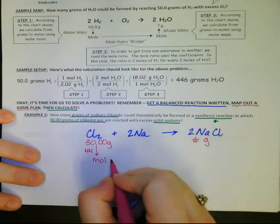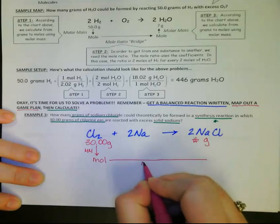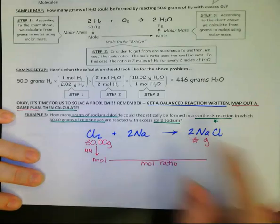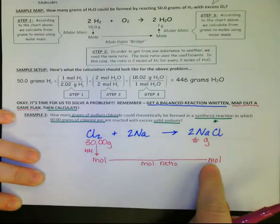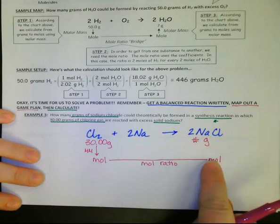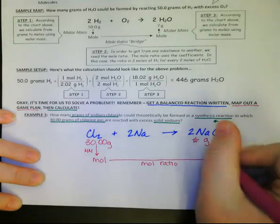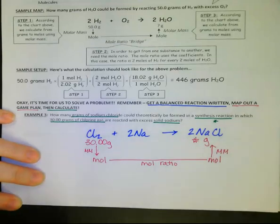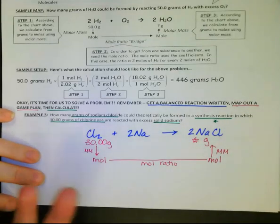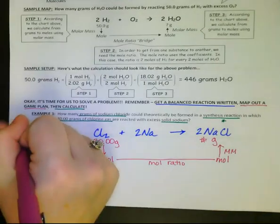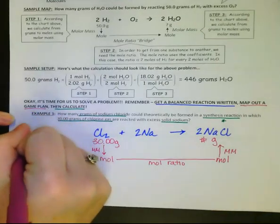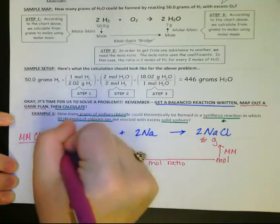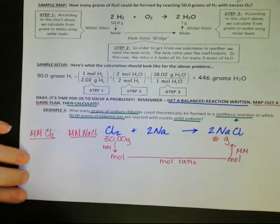Chemistry is worthless with grams of things. We must get into moles. So my map is going to be to convert from grams to moles using the molar mass. Once I have moles of chlorine gas, I can walk across my bridge using my mole ratio.